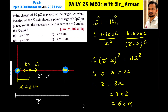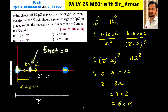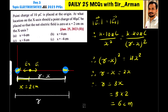A point charge of 10 microcoulombs is placed at the origin. At what distance on the x-axis should a point charge of 40 microcoulombs be placed so that the net electric field is zero at x equals 2 centimeters on the x-axis? We have 10 microcoulombs at the origin, and we want the net electric field to be zero at 2 centimeters from the origin.